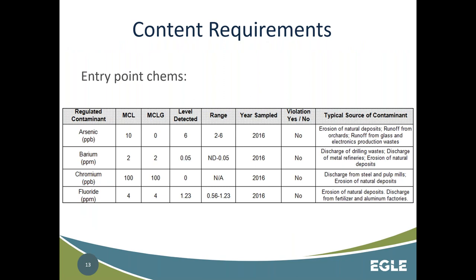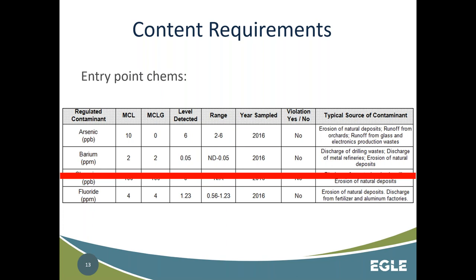When filling in the data table for your entry point chemicals — anything from arsenic, fluoride, barium, metals, radiologicals, SOCs, VOCs, and similar contaminants — you want to add the highest level detected and the range for each contaminant. If you have more than one entry point, the range goes from the lowest to the highest results across all entry points. Note that if a contaminant like chromium shows a level detected of zero, it means the supply sampled for it but didn't detect anything, and technically it needs to be removed from the table. The data table should only include detected contaminants — the only exception is sodium.